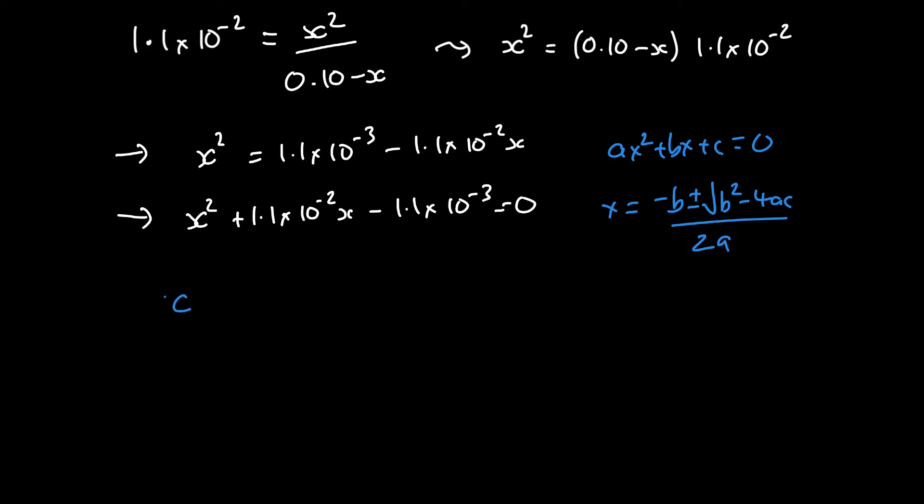So in our problem here, what do we have? So b is this term right here. So it is minus 1.1 times 10 to the minus 2 plus or minus. So we're probably going to take the positive root. Otherwise, we're going to end up with a negative overall number, which is bad. So b squared, 1.1 times 10 to the minus 2 squared minus 4a is the value in front of x squared. So there's a 1 there, even though we don't write it. Well, you can write it. There you go. And c negative 1.1 times 10 to the minus 3.